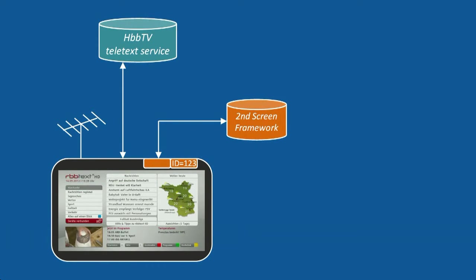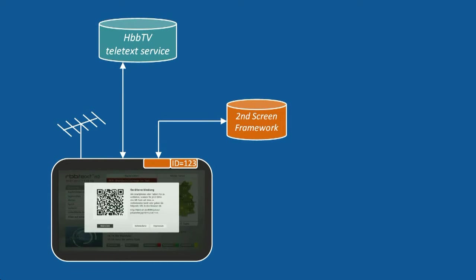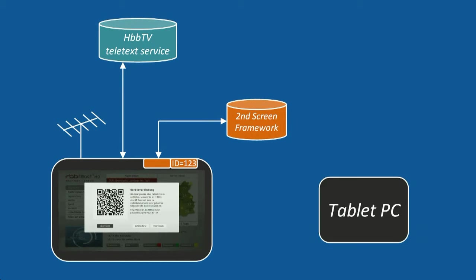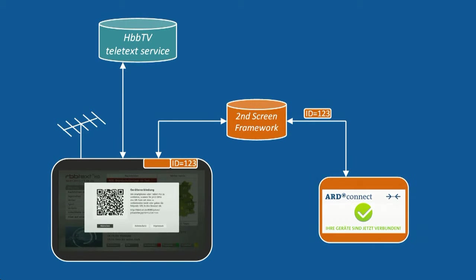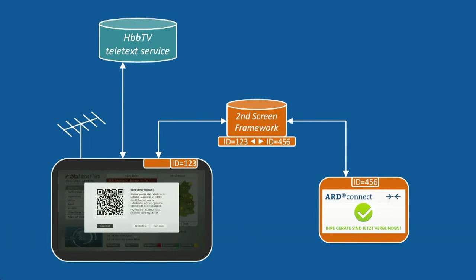It also draws a QR code on the screen and asks the user to scan this code with his tablet. All usual QR code reading apps can be used to scan the code. The code contains a URL loading a specific launcher application on the tablet. As a parameter of the URL in the QR code, the tablet passes also the device ID of the TV set to the framework server. The server notes this ID and sends back a new device ID for the tablet, which is also stored locally in a cookie.